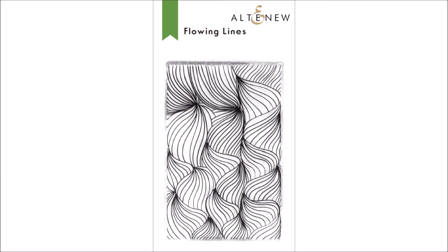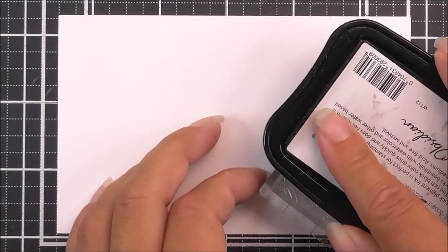Introducing Flowing Lines Stamp Set from Altenew. This is a 2 by 3 inch clear stamp set containing one individual stamp.